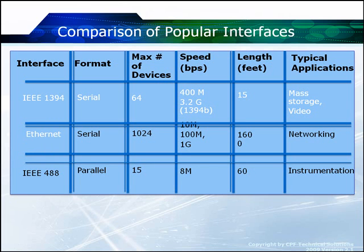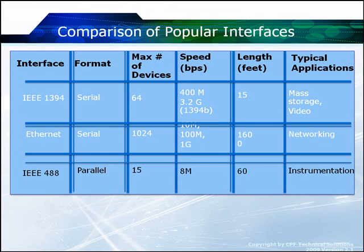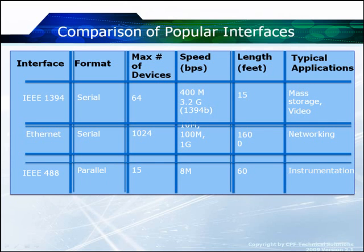Ethernet's application is more for networking. It is a serial protocol — you can have up to 1,024 devices and it is faster than USB at the 1G level. You can go up to 1,600 feet in length. IEEE 488, better known as GPIB, is a parallel bus. The maximum number of devices is 15, running at 8 megabits per second, with a length limit of 60 feet, mainly used for instrumentation automation. GPIB is an older interface, and in the instrumentation test and measurement world, we are now replacing GPIB with USB.